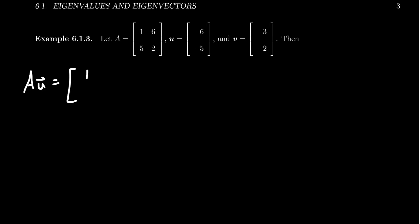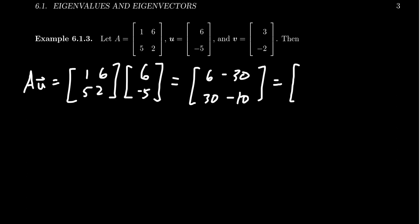So if we take A times U, where A is [1, 6; 5, 2] and U is [6, -5], we do the product of the matrix and the vector. We end up with 6 minus 30 for the first entry, and then 30 minus 10. Simplifying that, we get -24 and 20. So we calculate the matrix-vector product.